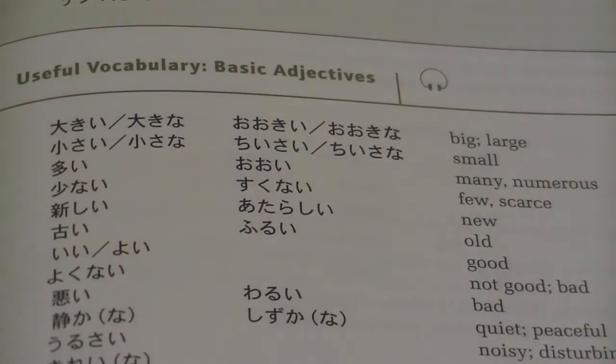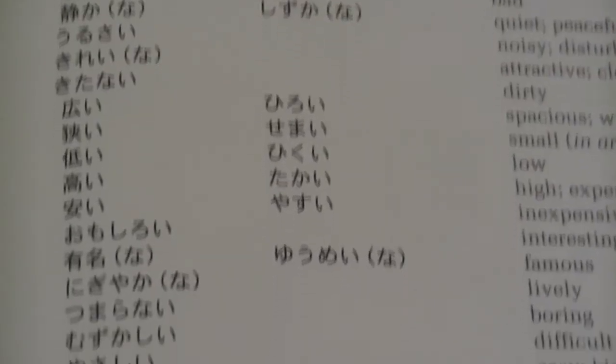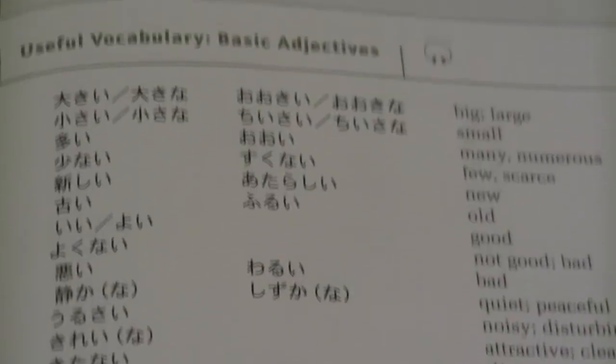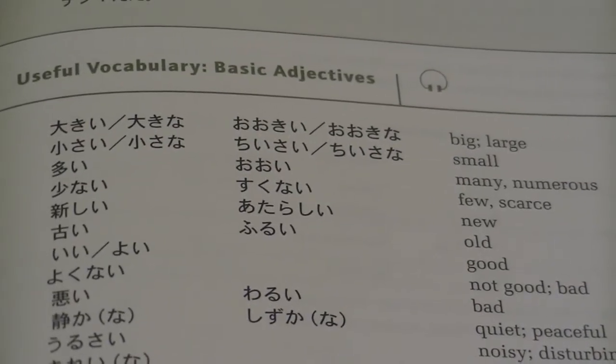It's a simple grammar point. We're also going to be talking about adjectives today. There are two different kinds. What you're seeing right now is just a big list of adjectives. At the end of the video, it'll have all of these in romaji — at least the most important ones. Big is ooki, small is chisai.